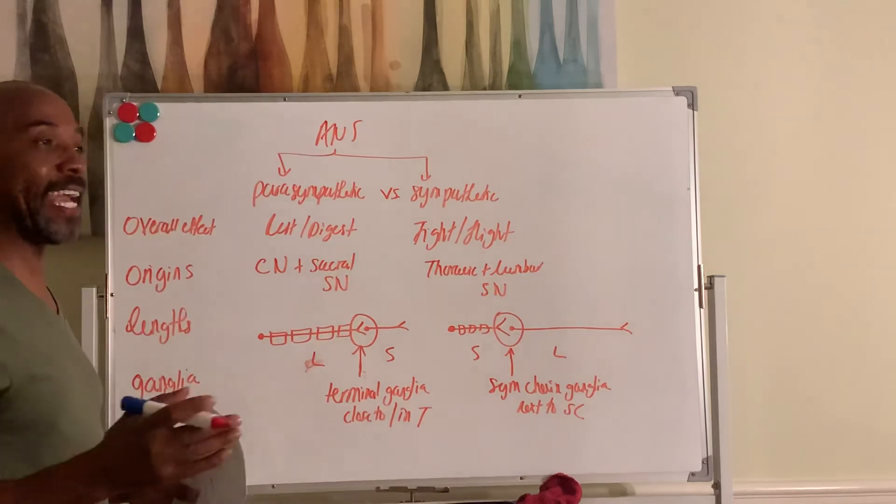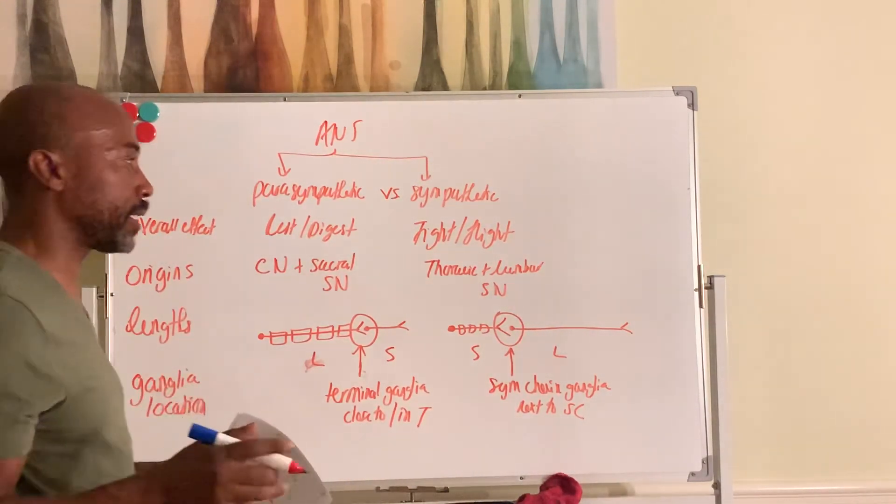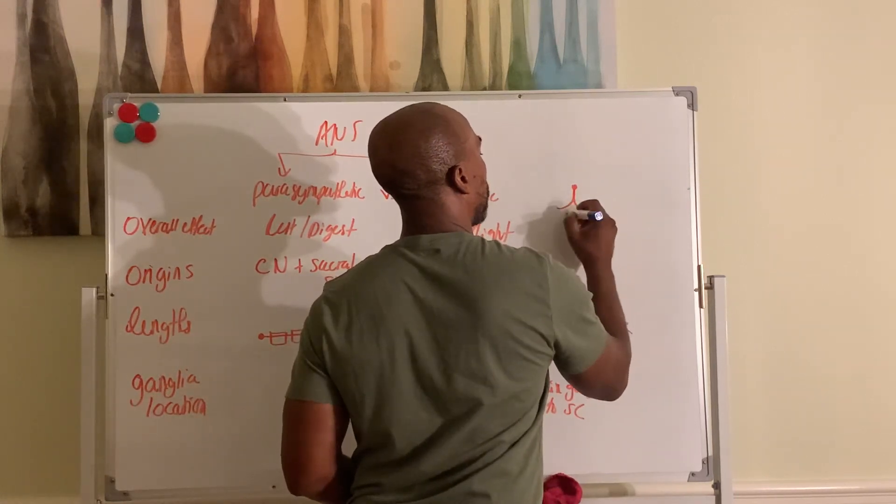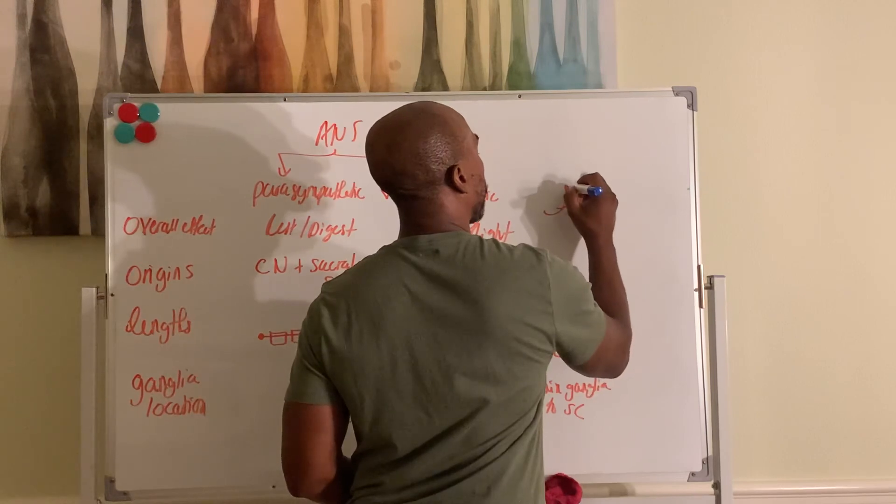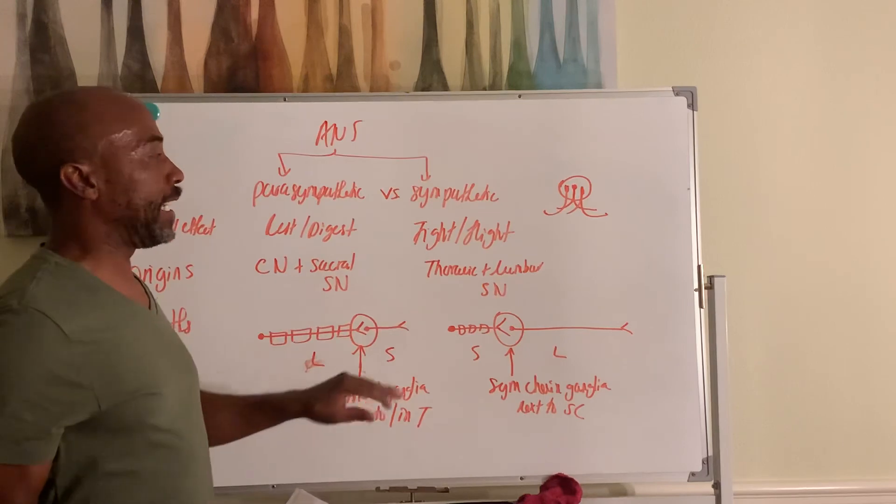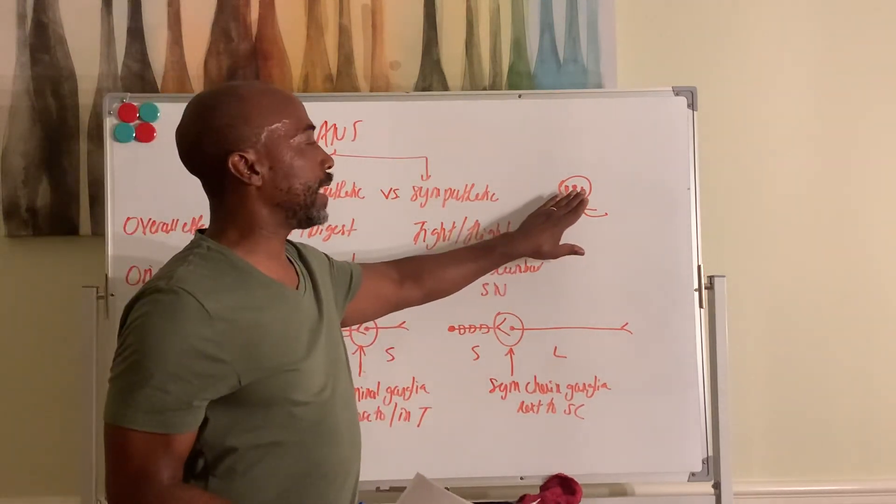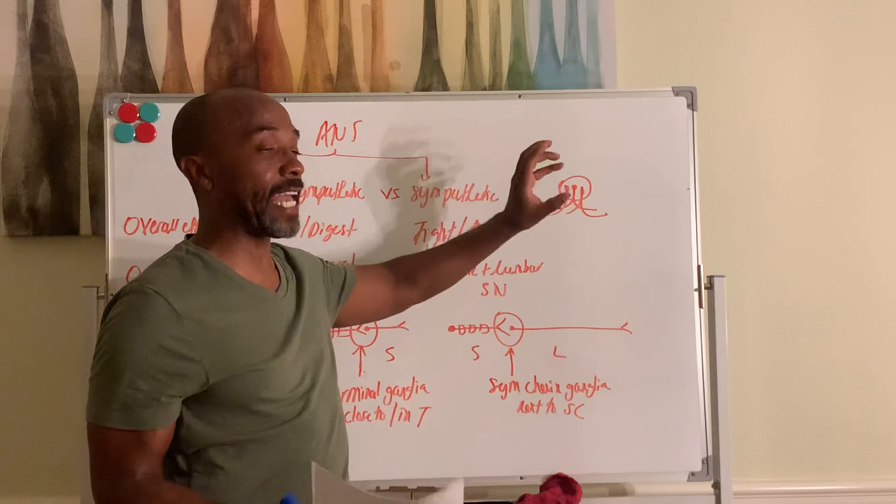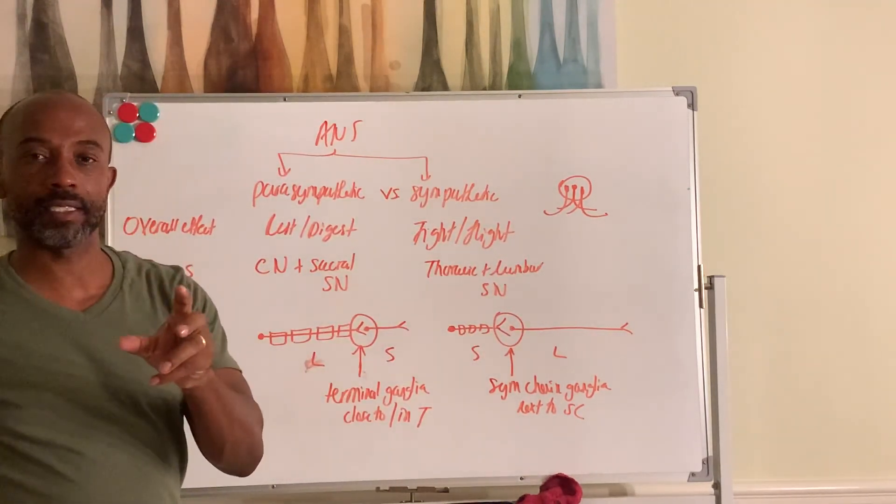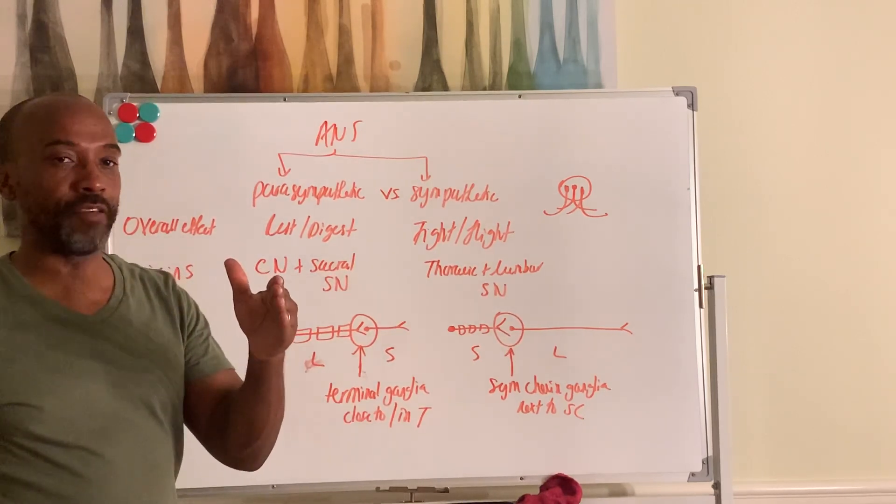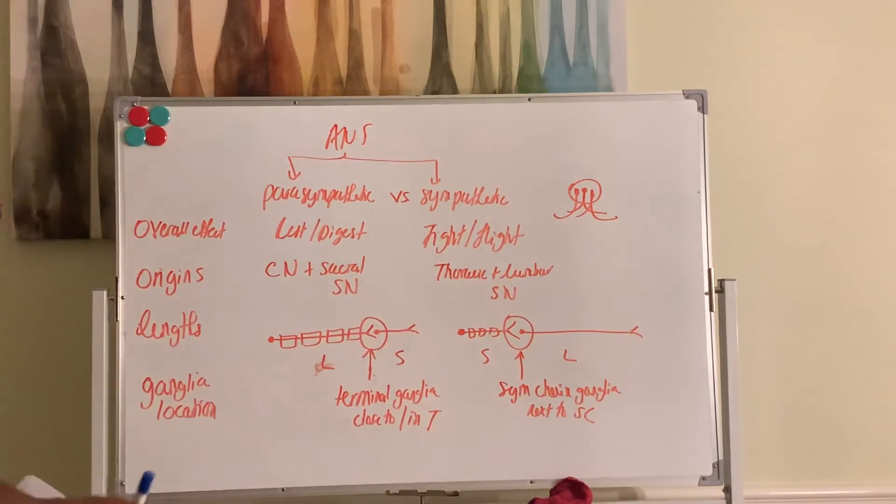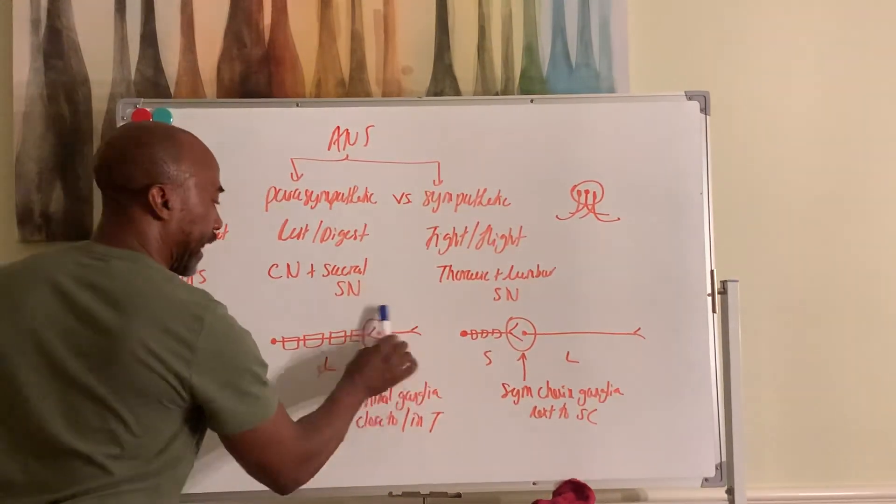A ganglia is just a collection of somas. So when you have your soma, your soma, all of these somas together here form a ganglia. That's how it's defined. And if these somas were together inside the CNS, it would be called a nuclei. So nuclei and ganglia are both referring to collections of somas. And it's nuclei if it's in the CNS, and it's ganglia if it's in the PNS. So since this is in the PNS, we call it the ganglia.